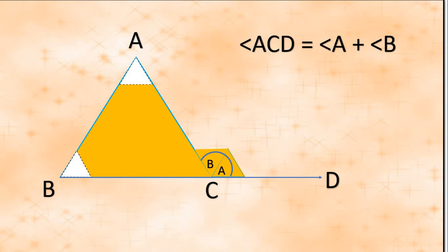From this activity we can conclude that the exterior angle of a triangle is equal to the sum of its two interior opposite angles.